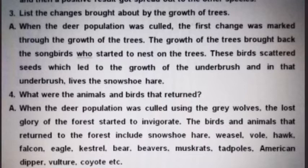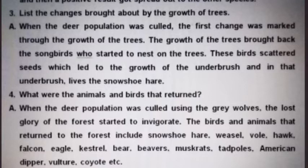The fourth question: what were the animals and birds that returned? When the deer population was culled using the gray wolves, the lost glory of the forest started to invigorate. The birds and animals that returned to the forest include snowshoe hare, weasel, wolf, hawk, falcon, eagle, kestrel, bear, beavers, muskrats, tarpals, American dipper, vulture, coyote, etc.